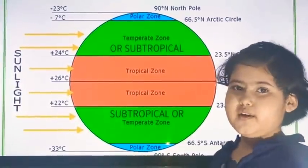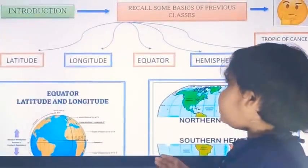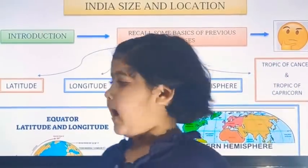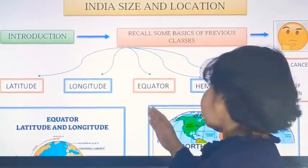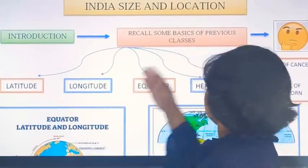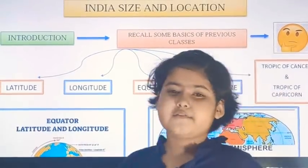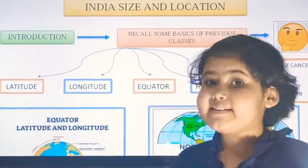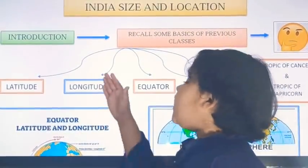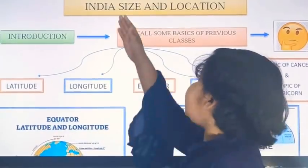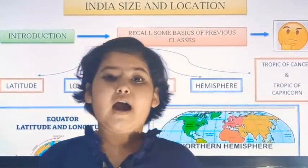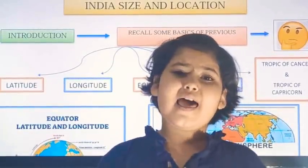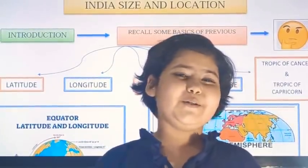In this lecture we have studied about the Equator, Hemisphere, Latitude, Tropic of Cancer, and Tropic of Capricorn. In the next lecture we will study about Longitude and India's location. If you are liking my video, please like, share, and subscribe. Bye bye.